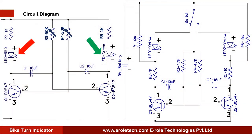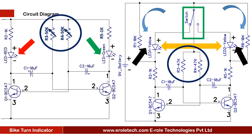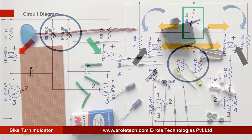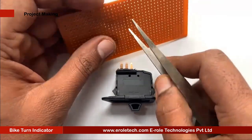In the bike turn indicator, we have replaced the red and green LEDs with yellow LEDs. We have changed the location of the LEDs so that we can easily cut the supply to each LED. We have used two 10-kilo-ohm resistors to provide power to the left and right parts of the circuit. Instead of a variable resistor, we have used a 47-kilo-ohm fixed resistor. When we slide the switch left, the left LED connects to the 9-volt supply and starts blinking. When we slide the switch right, the right LED connects to the supply and starts blinking.